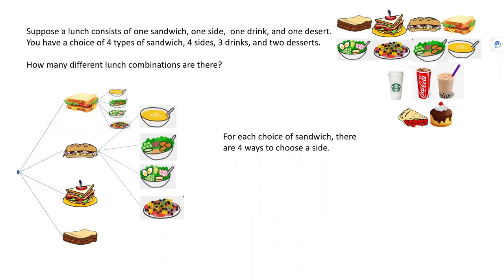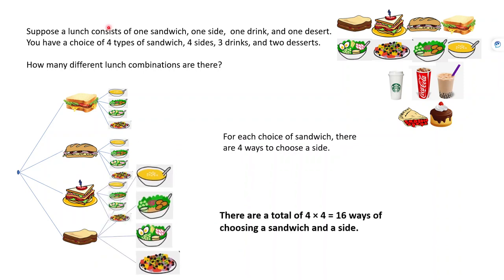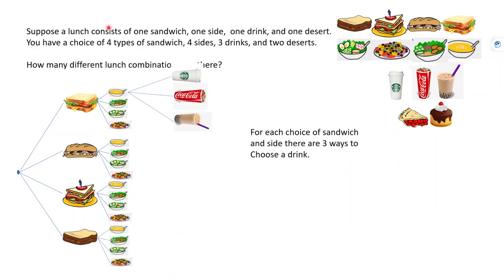For each sandwich choice, there are four sides, giving us four times four — 16 ways of choosing a sandwich and a side. Then we choose drinks. For each of our 16 choices, we have three options for drinks. We're building a tree-like structure where a branch corresponds to an actual choice. The branch across the top might be, say, a salami sandwich, some soup, and a Starbucks coffee — and that pattern repeats for each combination.